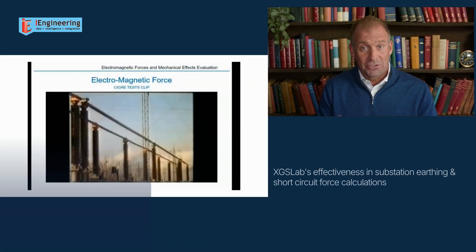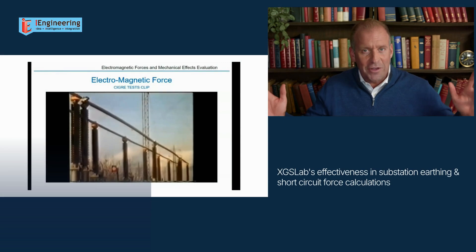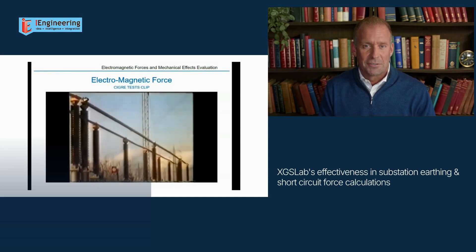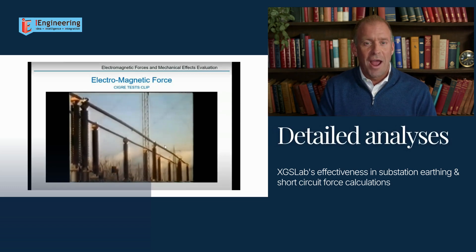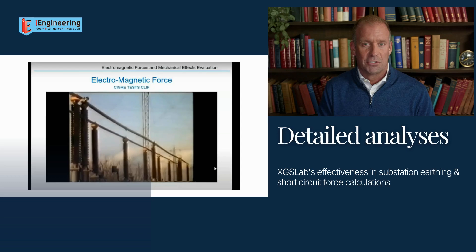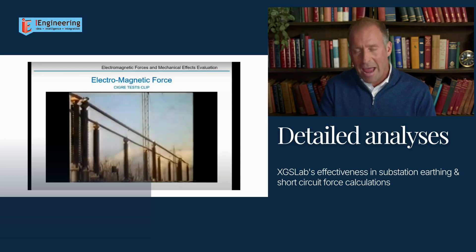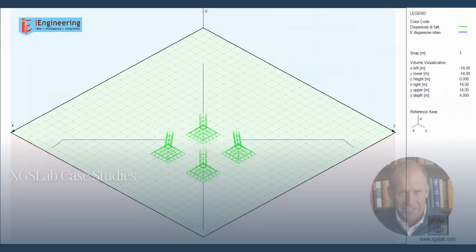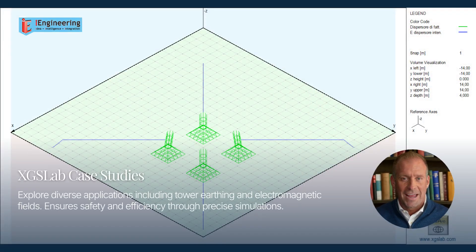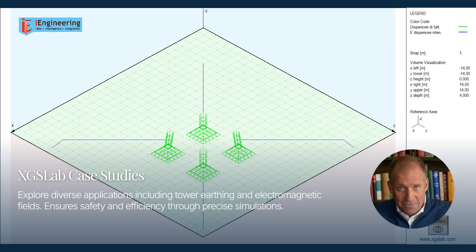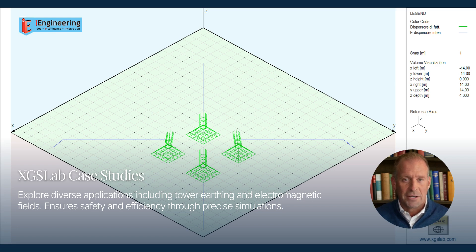In case studies, XGSLAB demonstrates its capabilities in substation earthing, industrial plants, railway, mining and power plants. It provides detailed analyses of earth potential rise, step and touch and transfer voltages, current distribution, short circuit force and voltages for safe designs. XGSLAB's case studies also highlight its application in tower earthing and electromagnetic fields. If you have a system to study, we recommend you first simulate it in XGSLAB and find the most cost-effective solution before executing the project. XGSLAB ensures safety and efficiency through precise simulations and innovative solutions.